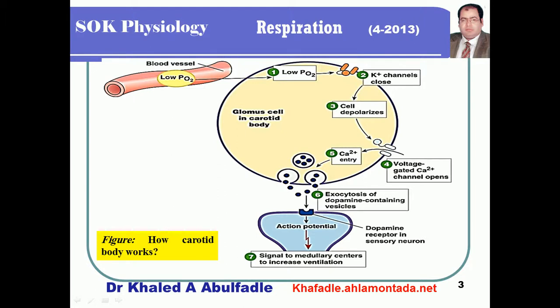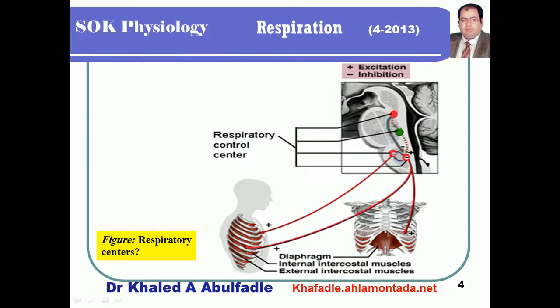The released dopamine affects dopamine receptors (D receptors) on the sensory neuron that synapses with the glomus cell in the carotid body. Dopamine receptor activation initiates an action potential, which goes on to affect the medullary respiratory centers — specifically the dorsal respiratory group — to increase ventilation.